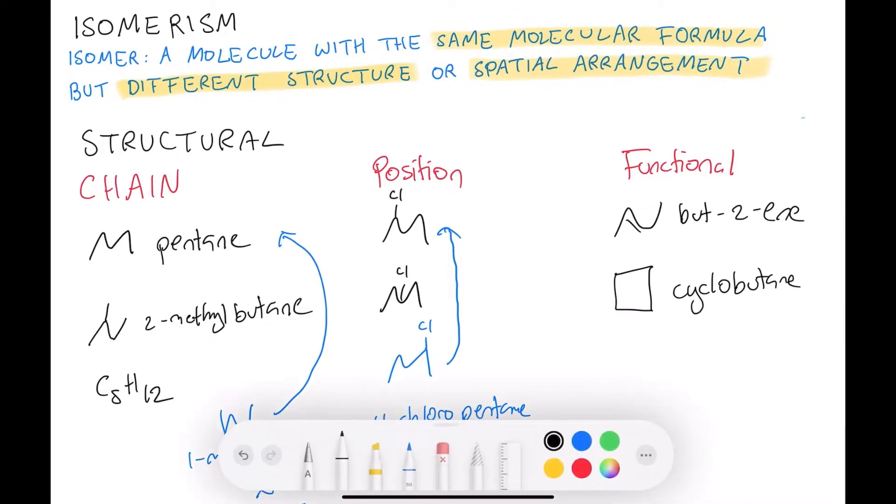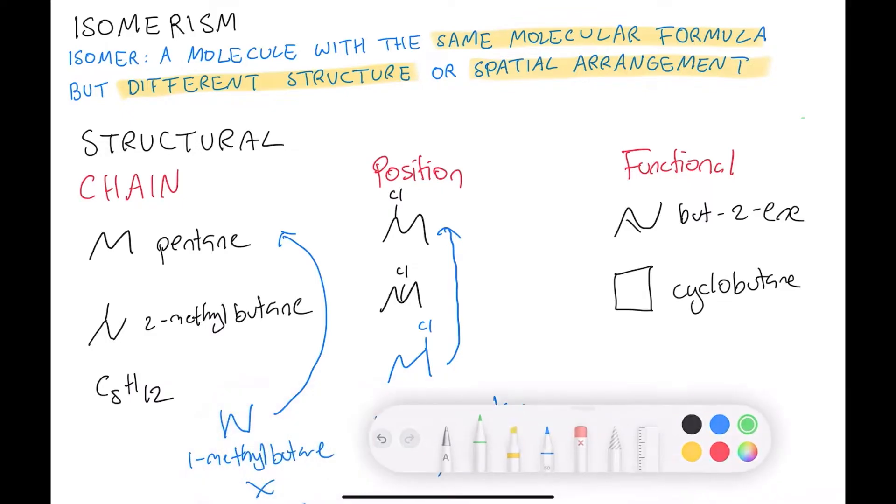And its functional isomer is cyclobutane. So alkenes and cycloalkanes have the same general formula. Because both of these have the formula of C4H8. And that's it for structural isomerism.